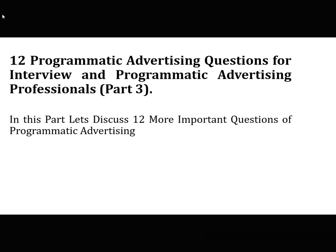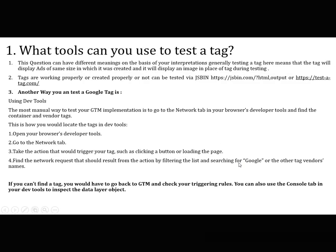The first question is: what tools can you use to test a tag or ad unit tag? Testing a tag generally means verifying that the tag displays ads of the same size in which it was created, and displays an image in place of the tag during testing. Tags can be tested via jsbin — you can use jsbin.com with HTML output — or you can use justtag.com.